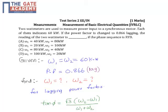Hello students. This question is taken from test series 2, from the subject measurements, from the topic measurement of basic electrical quantities. In the given question, 2 wattmeters are used to measure power input to a synchronous motor. Each of them indicates 60 kilowatts, so W1 and W2 are each 60 kilowatts.